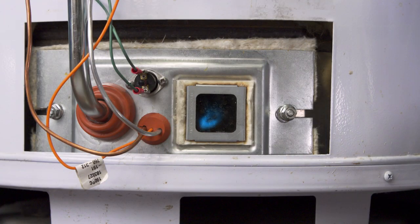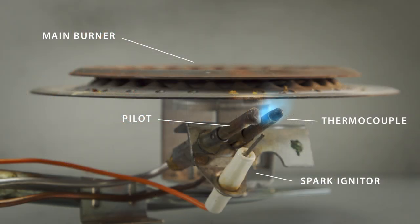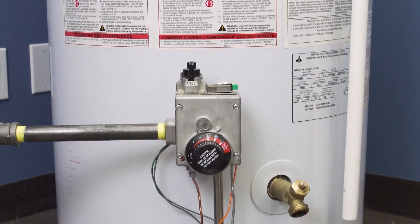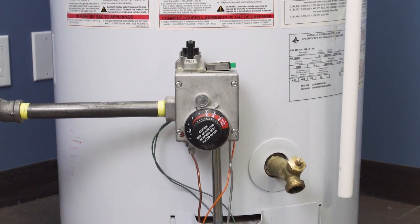Standing pilot water heaters use a pilot flame that burns continuously and will ignite the main burner whenever heat is needed. Next to the pilot is the thermocouple, which generates a small electrical current when heated by the pilot flame. This produces less voltage than a AA battery, but enough to power the gas valve.